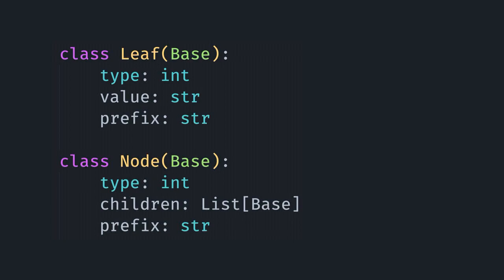The way this would look in code is we have the leaf and the node class that both extend the base class, and they both use an integer type to determine what they are. In the case of the leaf, that's an integer representing the token type, and in the case of the node, that's an integer representing the grammar rule it's part of. For leaves, the value is the actual on-disk representation of that element. For nodes, you have children, which is a list of any leaf or node objects contained within it. They both share a prefix string, which is all of the white space, formatting, new lines, and so forth that precedes that element in the tree — this is what allows us to dump it back out and get the same original content.